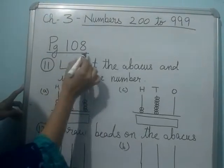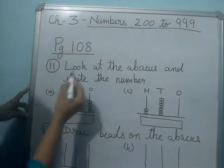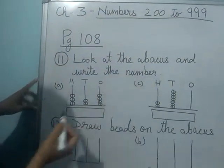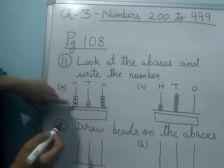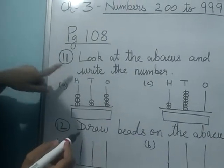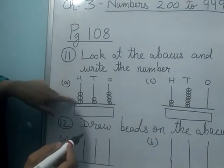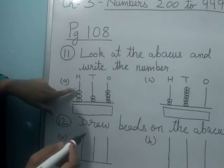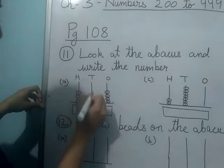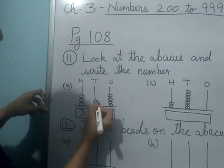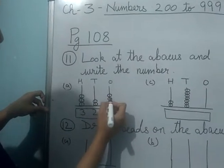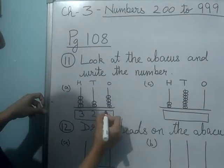Now page number 108. Look at the abacus and write the numbers. So we will count the beads on the abacus. In 100's place, how many beads are there? 1, 2, 3. In 10's place, 1, 2. In 1's place, 1, 2, 3, 4.